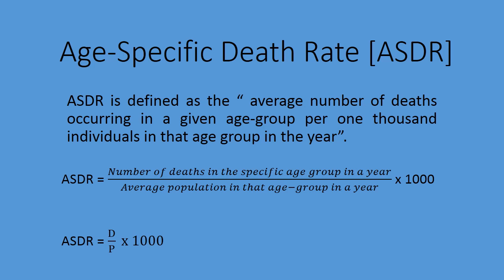The age specific death rate is defined as the average number of deaths occurring in a given age group per 1000 individuals in that age group in a year. So ASDR helps us compute the death rate happening in a particular age group. The formula is: ASDR is equivalent to the number of deaths in the specific age group in a year, divided by the average population in that age group in a year, multiplied by 1000. This can be written as ASDR = D/P × 1000, where D is the number of deaths and P is the average population, both in the same year and in a specific age group.